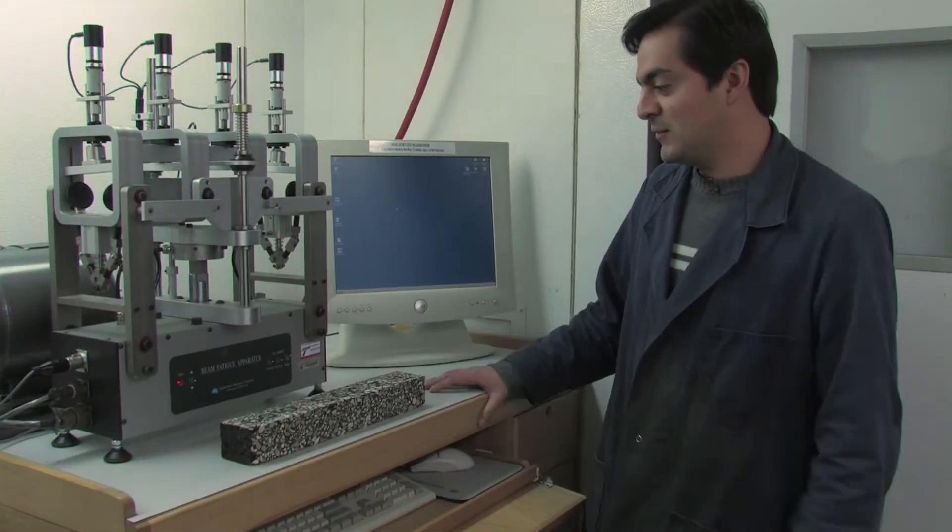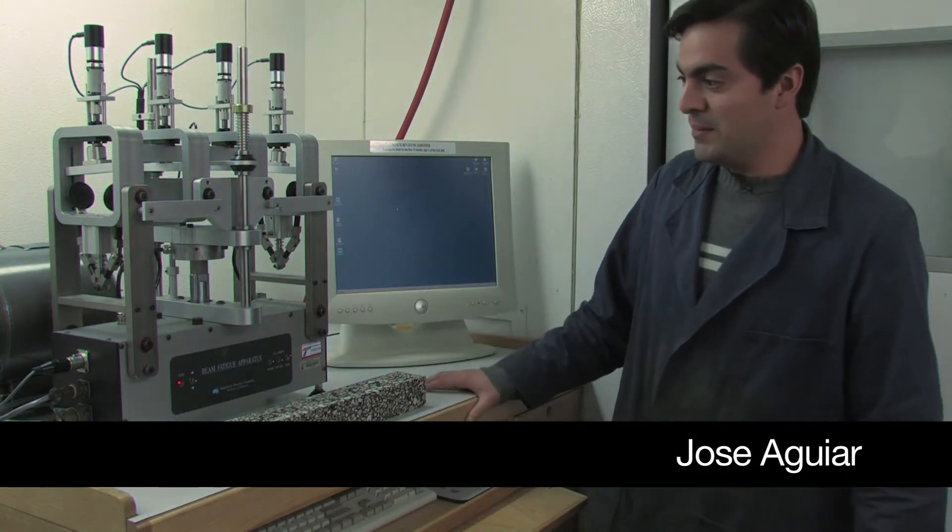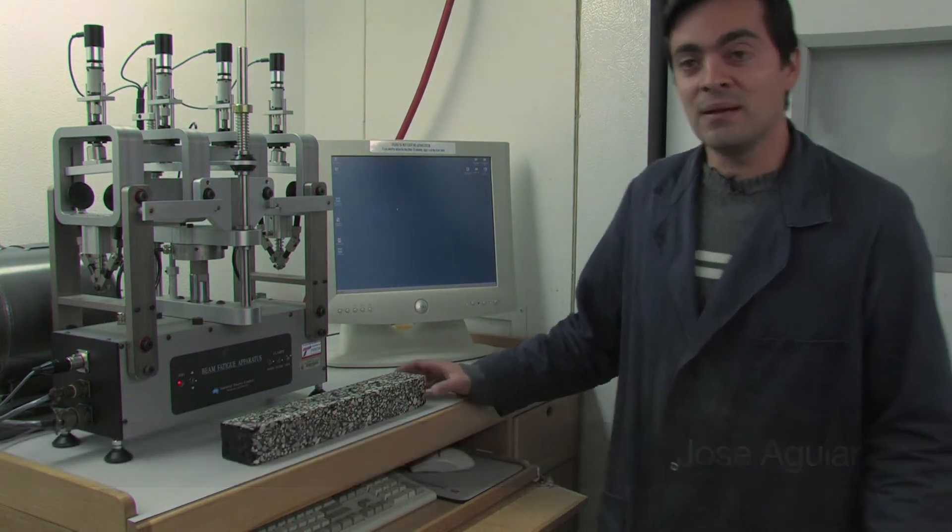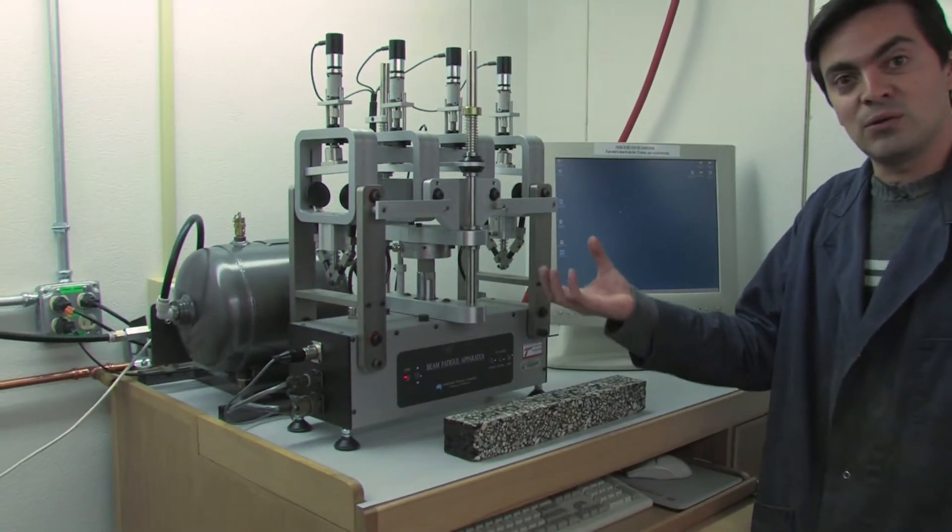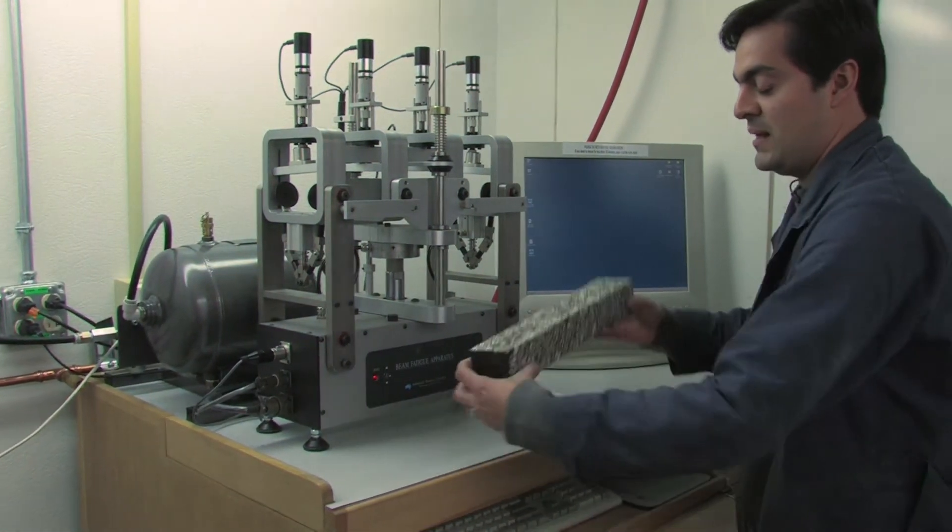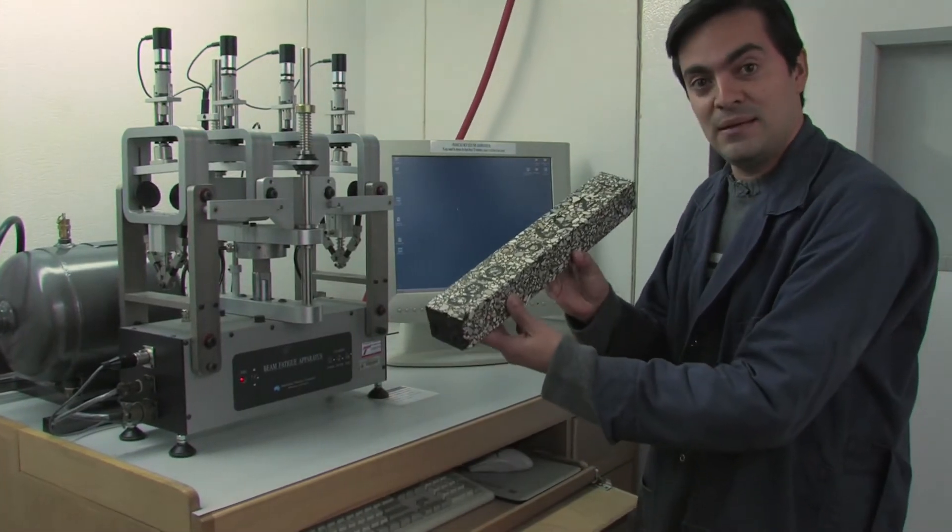Hello, today we're going to be talking about the four-point bending beam test, and basically this is the equipment. It's a pneumatic equipment, so as you can see we need air, and basically what it does is it's going to apply a load into a rectangular specimen like this.